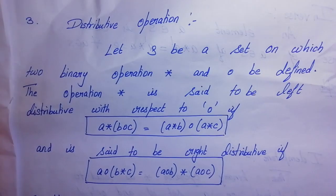Welcome to Sandy's Classroom. In the last class, we talked about binary operations — the definition with an example. There are two types of binary operations: associative and commutative.